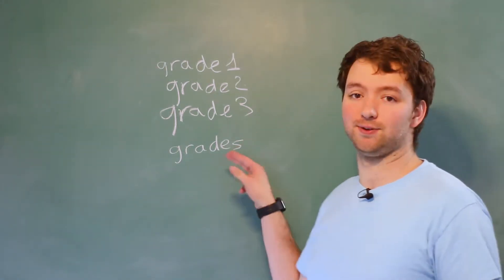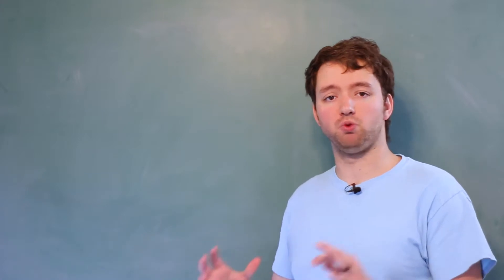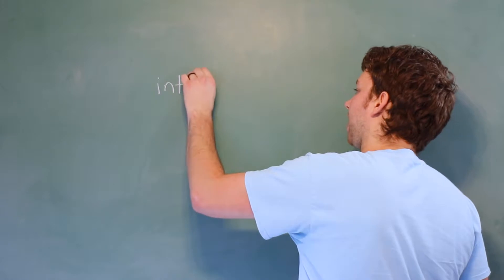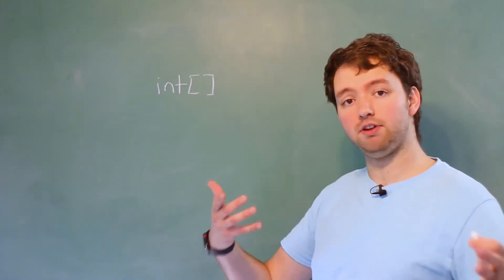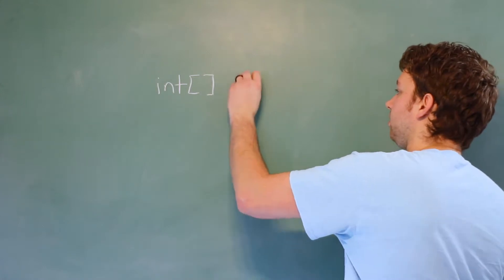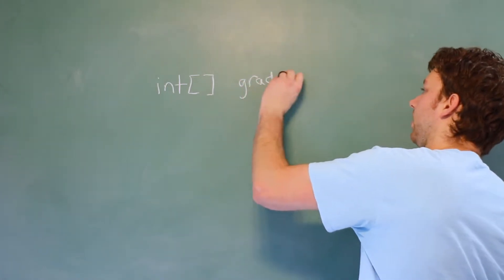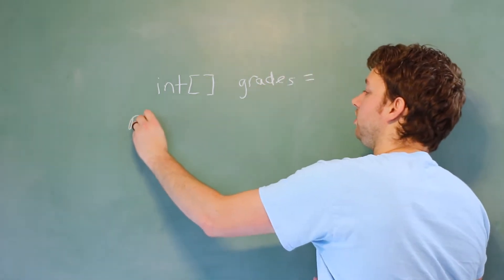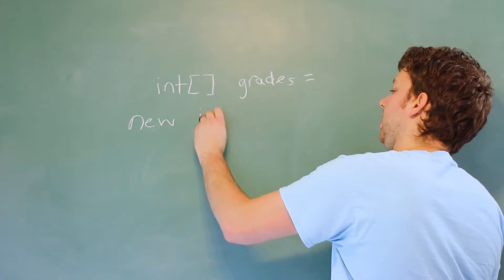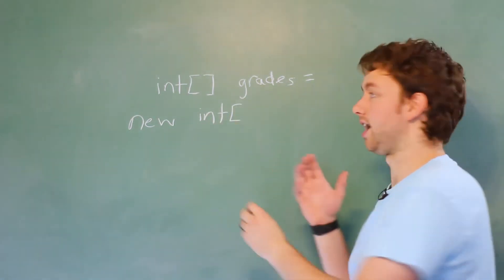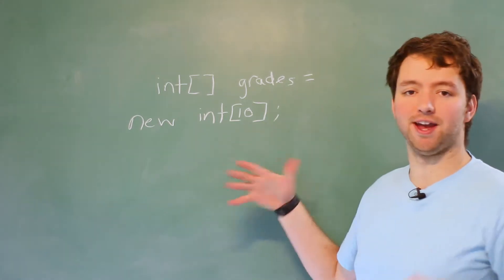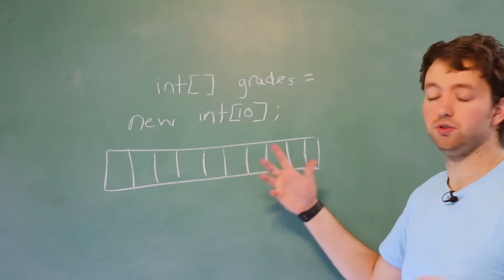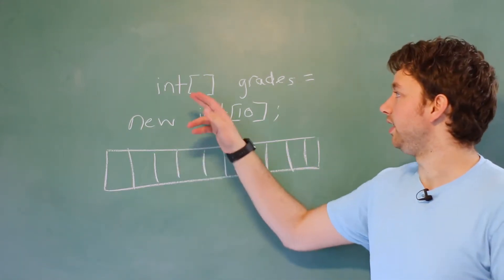Let's talk about how to create an array. To create an array, you say what type of information you want to store — in this case we're going to work with integers. Then you put square brackets, and that's how you indicate that it's an array. Then you give it a name. This declares the array, but we actually have to initialize it by saying equals new int square brackets, and then we give it a size such as 10. So here's how we create an array of 10 elements.